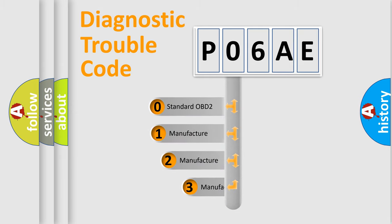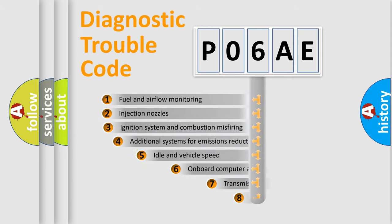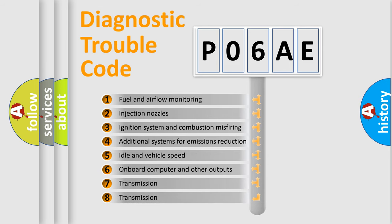If the second character is expressed as zero, it is a standardized error. In the case of numbers 1, 2, or 3, it is a manufacturer-specific error. The third character specifies a subset of errors.